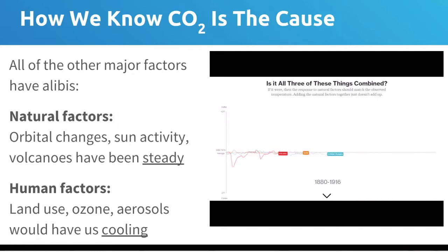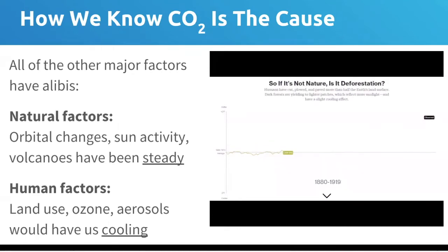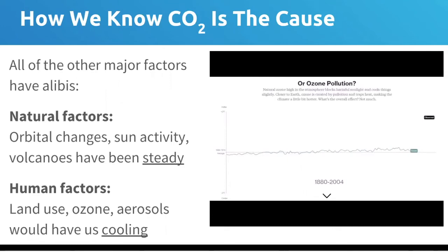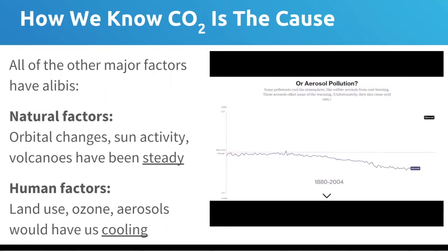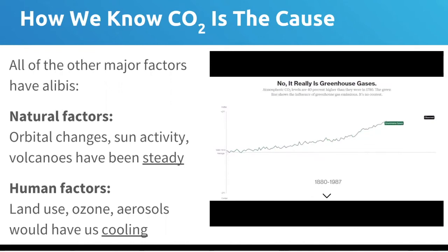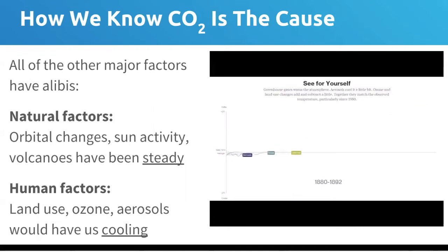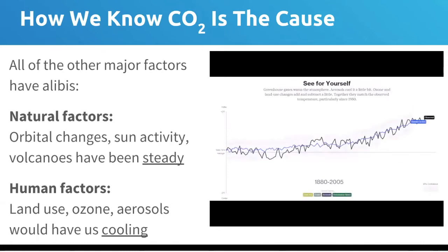We know those other things have either been steady over the interval during which we've been monitoring increasing global temperatures, or if anything, they would be driving us toward global cooling. For instance, we can look at solar activity and ask whether it correlates to changes in global temperature. None of those have the correlation that carbon dioxide does. And of course, we know mechanistically that CO2 should lead to trapping more heat and therefore a rise in global temperature.